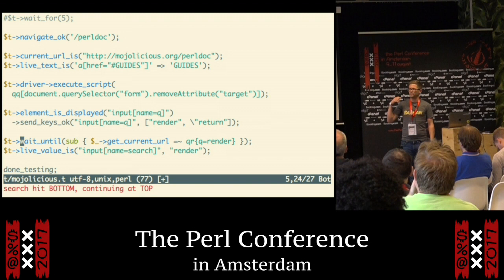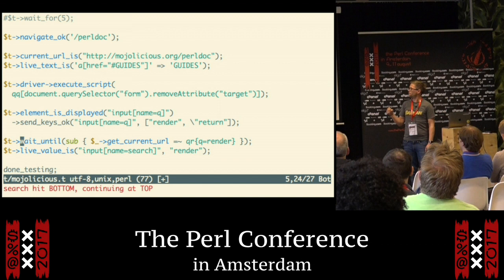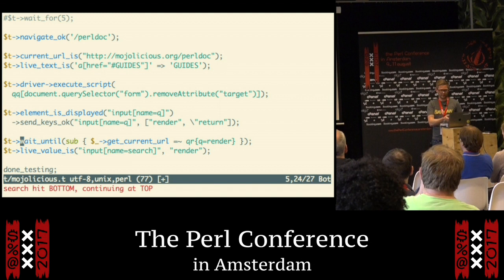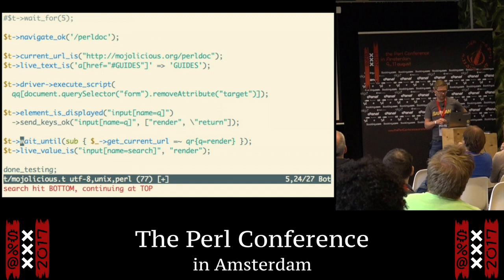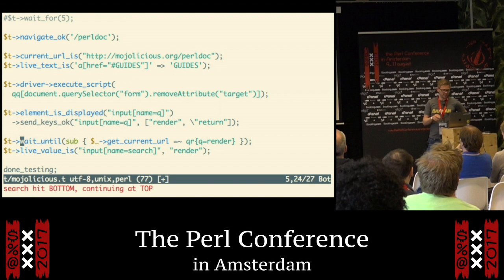After that there's a helper method called wait_until, which will periodically check if the browser has had some state change. Here it's going to check if the get_current_url method has changed to a new URL. Originally it says slash perldoc, but since we're submitting a form, we want to check that the query parameter is part of the URL.